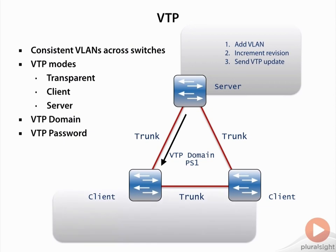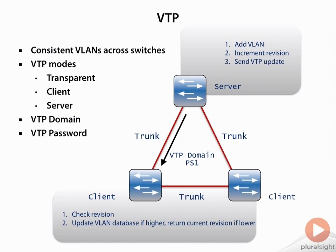The client receives that update — this encompasses both clients along the bottom, since the VTP update was sent out of both interfaces on the server. The client checks the revision number in the update. If the revision number is higher, it goes ahead and updates its VLAN database. If the VTP database revision number is lower, it sends a message back to the server saying the server has the wrong information. The client also forwards updates out of other trunk ports to update the VLAN database on the next switch down the path.